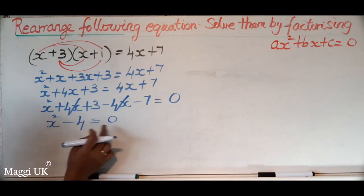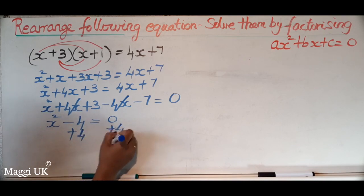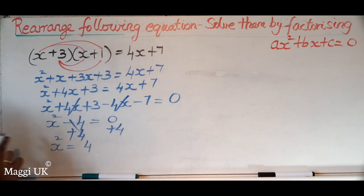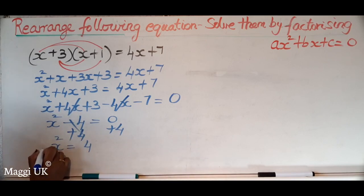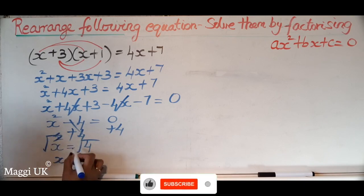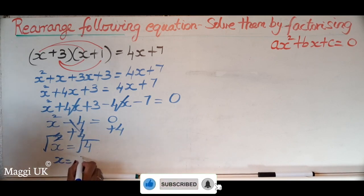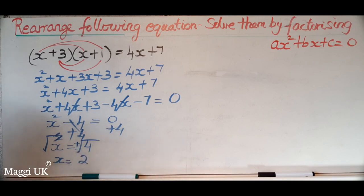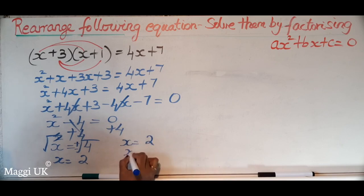We need to bring the negative to the other side, so positive 4 cancels off, giving x squared equals 4. We need to find x, not x squared, so we take the square root of both sides. The square root of 4 is 2, and we take plus or minus both values, so x equals positive 2 and x equals negative 2.